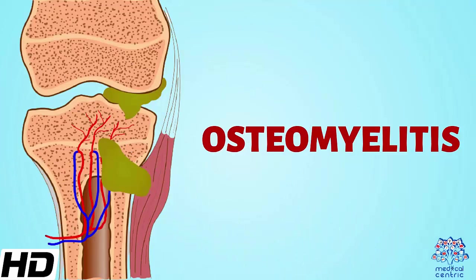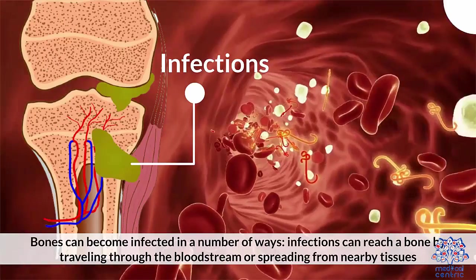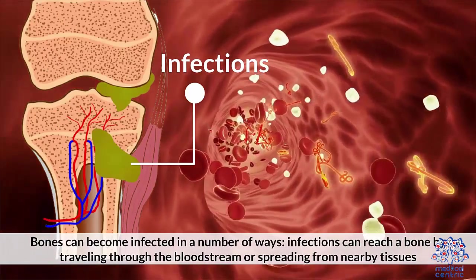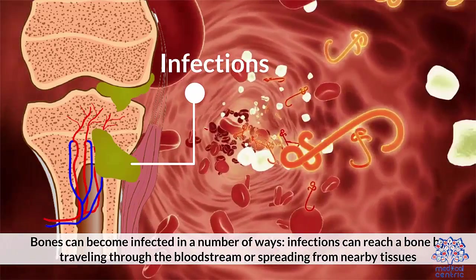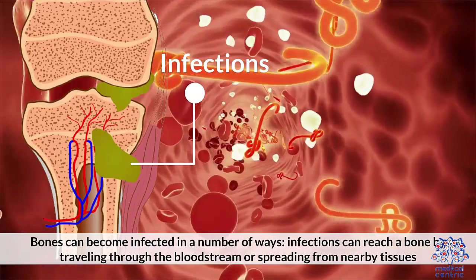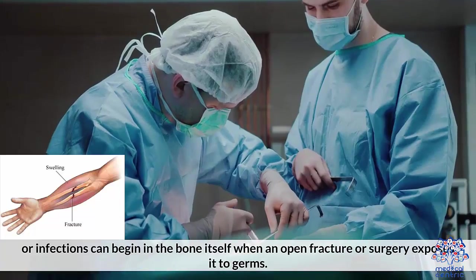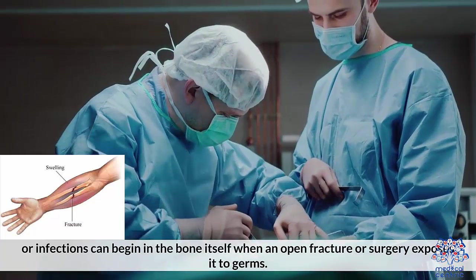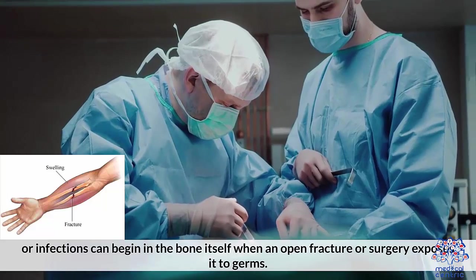Today's topic is osteomyelitis. Osteomyelitis is an infection and inflammation of the bone. Bones can become infected in a number of ways. Infections can reach a bone by traveling through the bloodstream or spreading from nearby tissues, or infections can begin in the bone itself when an open fracture or surgery exposes it to germs.